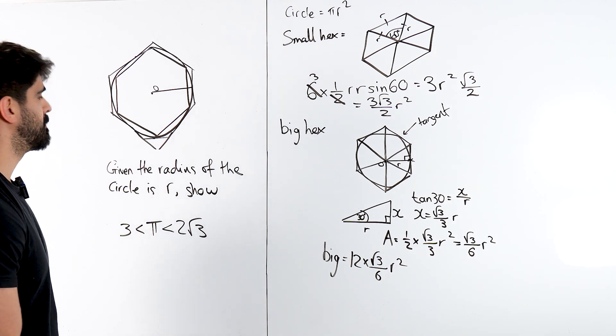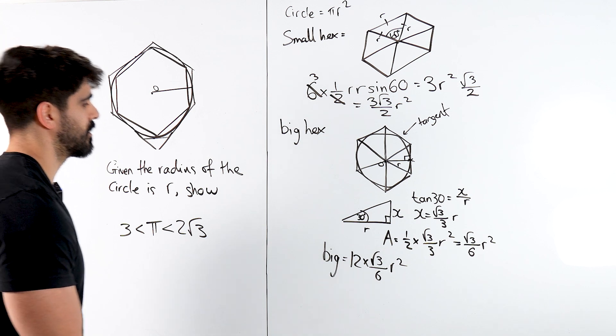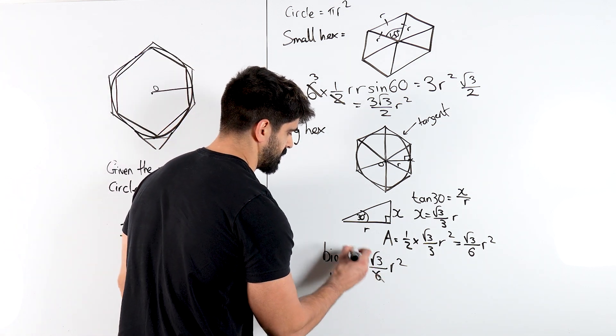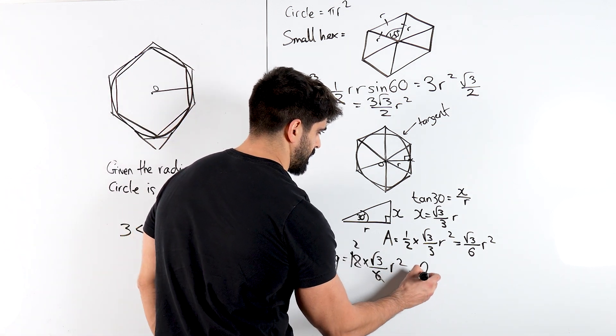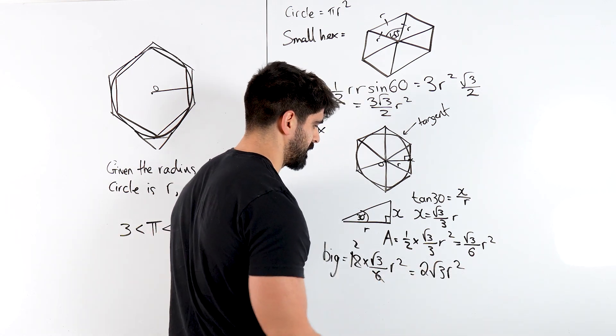And then we're basically there, aren't we? So we have the 6 goes into the 12 twice. So you get 2 root 3 r squared.